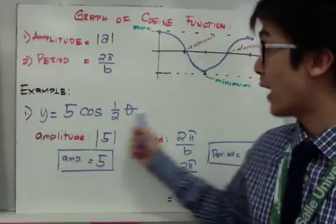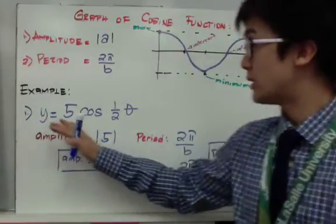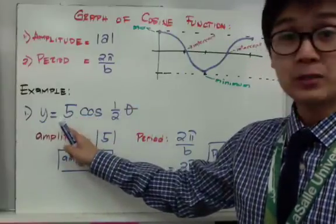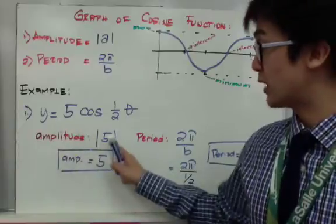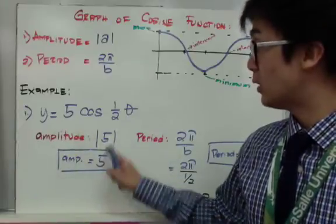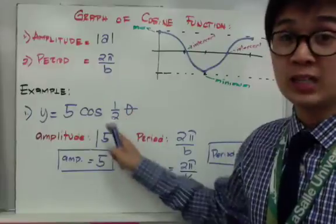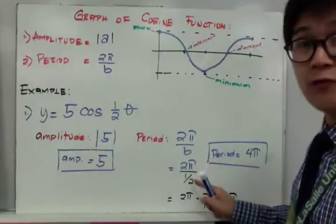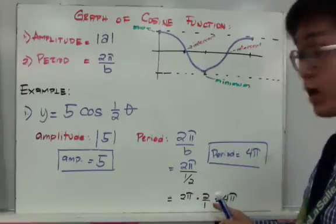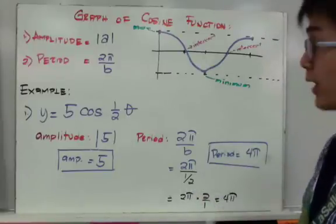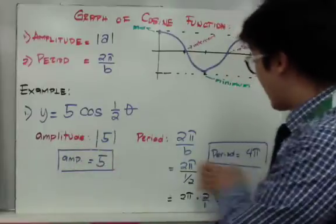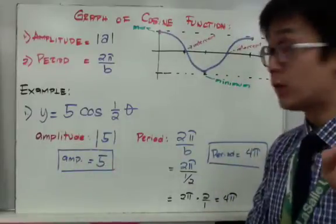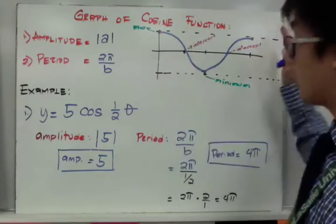For our first cosine example, we have y equals 5 cosine one-half theta. The amplitude is the absolute value of a, which gives us 5. The period is 2π over b, where b is one-half, so 2π divided by one-half equals 2π times 2, which gives a period of 4π. We will then partition 4π into four equal parts to graph the function.